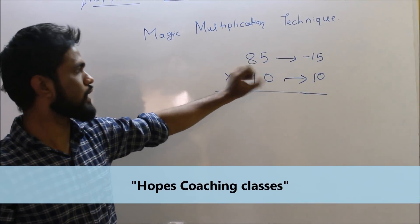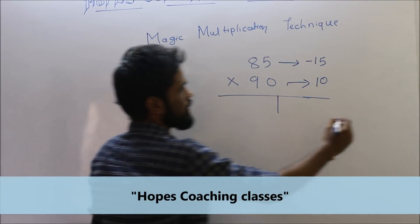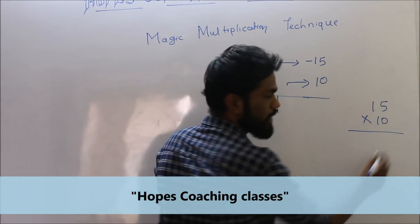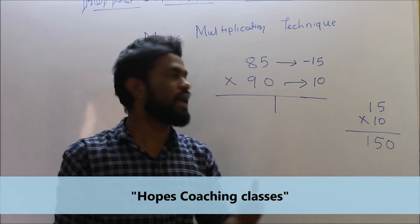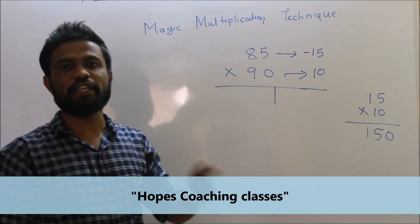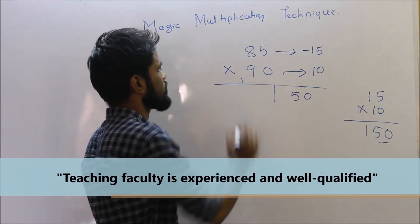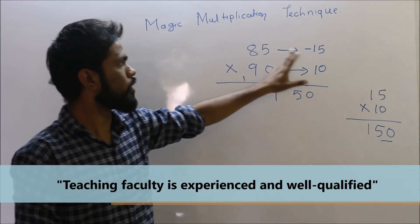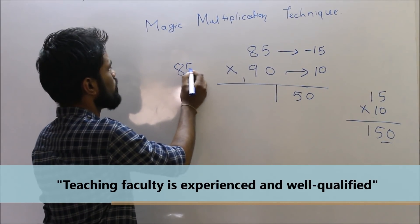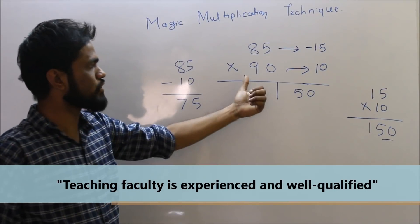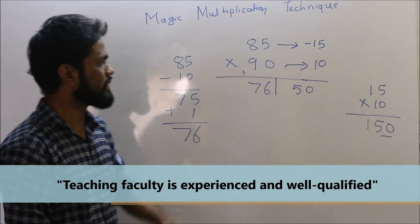We have two compartments. Multiply the differences: fifteen multiplied by ten equals one hundred fifty. But since we are comparing with one hundred, the last compartment must be two digits. So write only the last two digits — fifty — and take one as a carry-over. Then subtract ten from eighty-five: our answer is seventy-five. Add the carry-over of one to get seventy-six. Write seventy-six in the first compartment. Our final answer is seven thousand six hundred fifty.